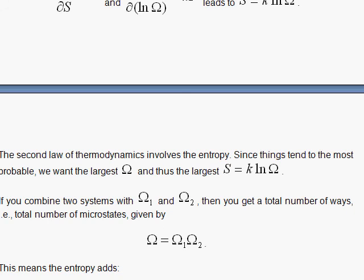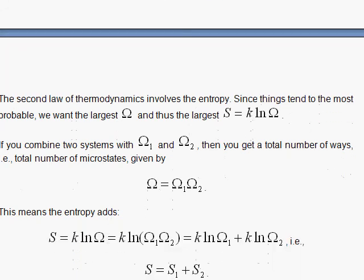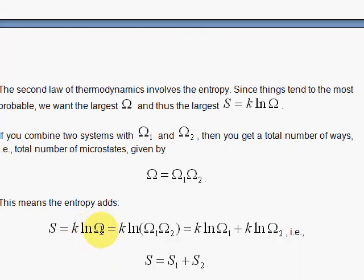So here, doing that, the entropy of the system that's combined is the log of the product here, which gives you the entropy of each system. A beautiful result that when you combine two systems, the total entropy is the entropy of one system plus the entropy of the others.